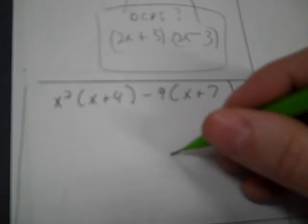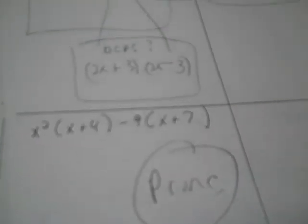Okay, next one I write prime because the parentheses aren't even the same. You got 4 to do. One of them's prime. One of them ends up being a difference of perfect squares.